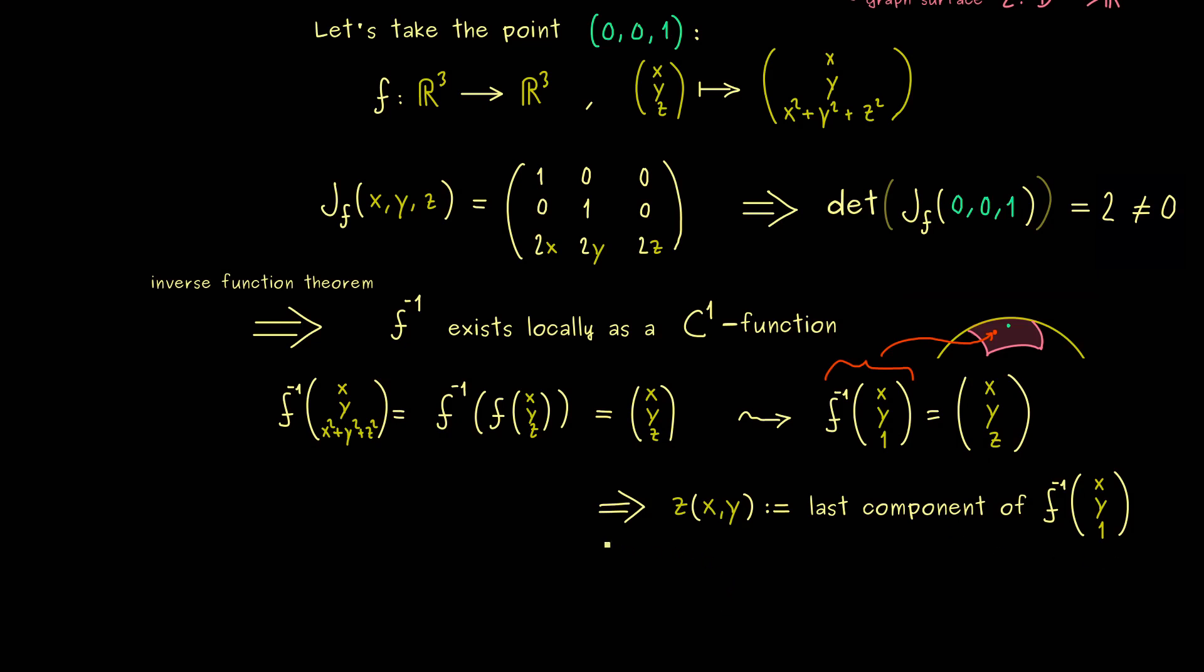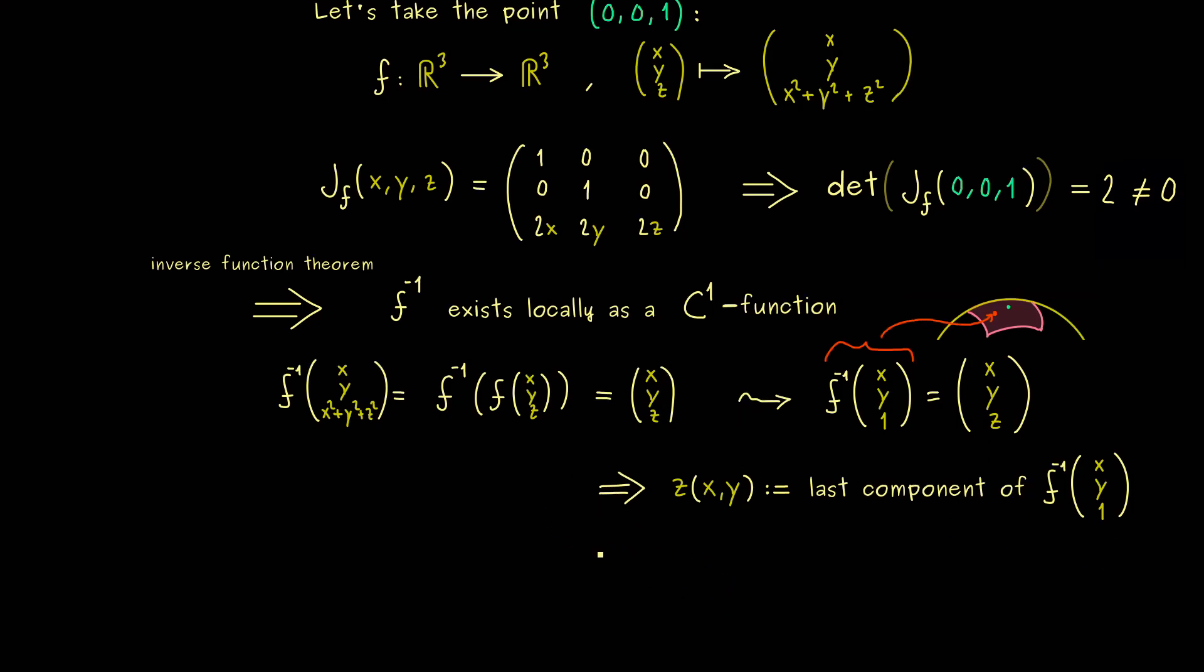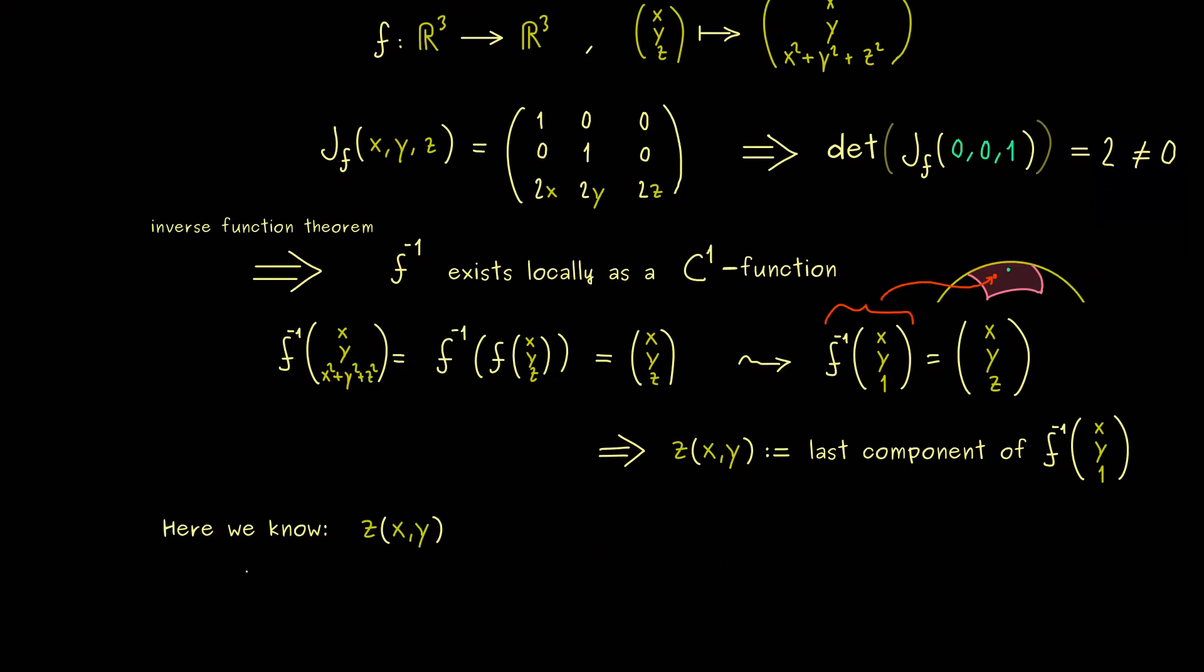However the problem here might be that the result is only interesting in theory if we are not able to write a simple formula for f inverse. But still sometimes knowing the existence of such a function can already be helpful. Now for this example here you could argue that the whole thing was not necessary at all, because we already know this inverse function. In this case it's simply given by the square root of 1 minus x squared minus y squared.